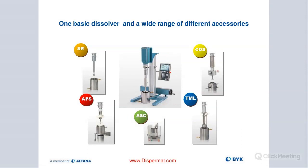Here is a picture showing the standard disperser in the middle and all the different attachments that go right on it to make it a cross-functional piece of equipment. We have the rotor stator on the top left, the APS vertical bead mill attachment on the bottom left, and we could also attach a wall scraping system. That is really important for very viscous materials — it's a platform with a rotating element where the sweeper blade is fixed, moving the product off the container wall and pushing it into the middle where the dispersing blade can properly disperse the mill base.